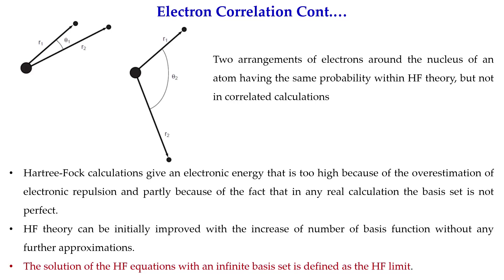Hartree-Fock calculations give an energy that is too high because of overestimation of electron repulsion, and partly because in any real calculation we cannot use an infinite basis set. In the Hartree-Fock treatment, an electron always faces extra repulsion from the average field, making the energy higher than it should be.